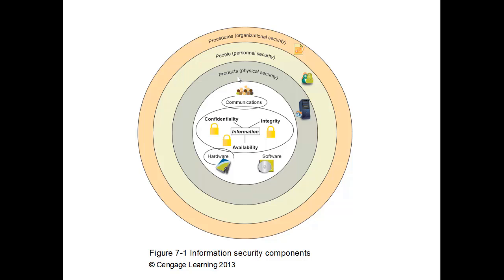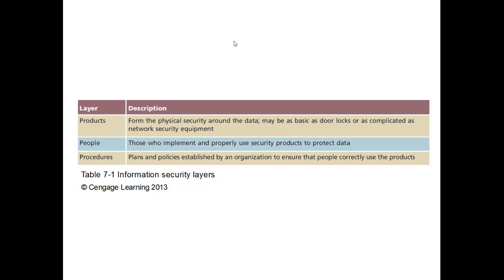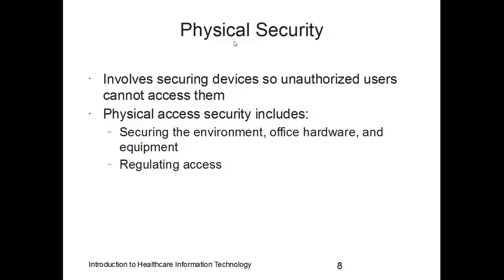Physical security involves the actual products — the desktops and servers. The next layer is personnel security — the people involved. Beyond that are procedures, which is the organizational security. Products form the physical security around data, such as a door lock in a server room. People are responsible for implementing and proper use of security products. Procedures are the plans and policies established by the organization to ensure people correctly use those products.